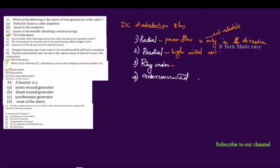The ring main system's advantage is that consumer terminal voltage fluctuation is very low, making it a very reliable DC distribution system.